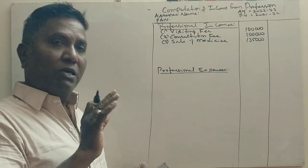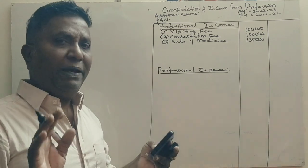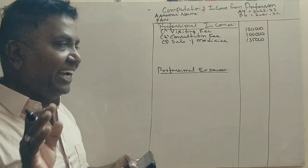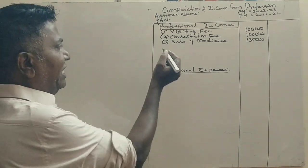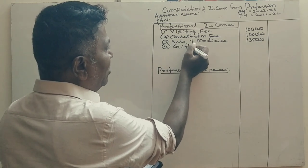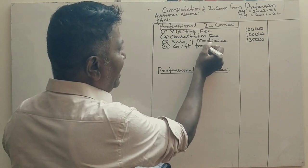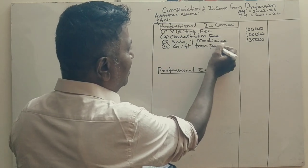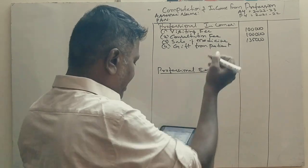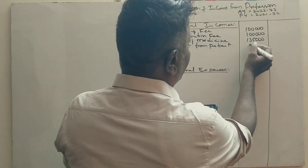Next, gift from patients. When a patient gives a gift during treatment, that is considered income. Gift from patients is 50,000 rupees.